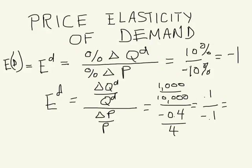The way we first did it was 10% over negative 10%, and we got negative 1. And the way we did it here, we said 1,000 divided by 10,000 divided by negative 0.4 divided by 4, that's 0.1 divided by negative 0.1, well, that's also negative 1. So whichever way you do it, you're going to get the same answer. This way, with linear demand curves, this way of putting it gets to be pretty handy.